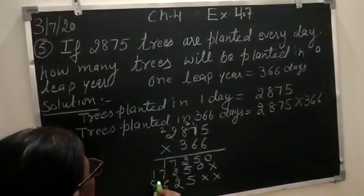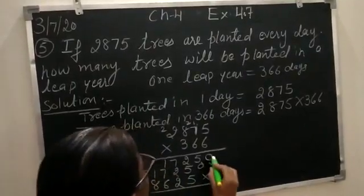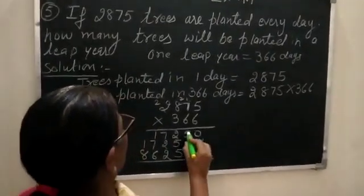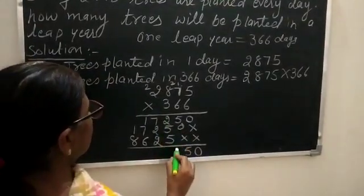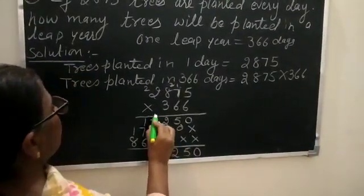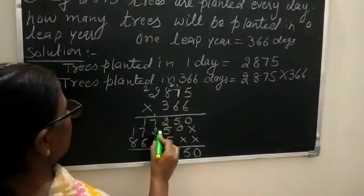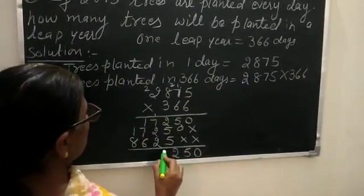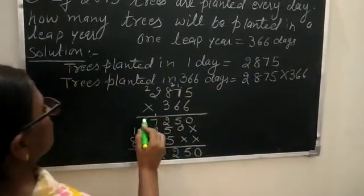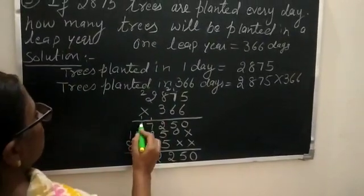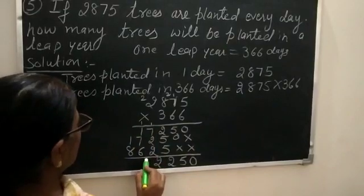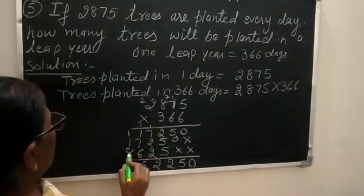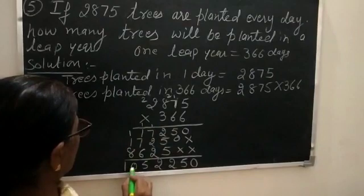Now add these numbers. 0, 5 plus 0, 5, 5 plus 5, 10, 10 plus 2, 12, 1 carry. 7 plus 1, 8, 8 plus 2, 10, 10 plus 2, 12. Then 1 carry, 1 plus 1, 2, 7 plus 2, 9, 9 plus 6, 15. Then 1 carry here, 8 plus 1, 9, 9 plus 1, 10.